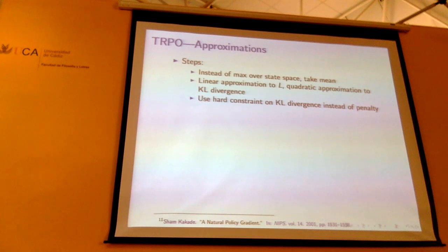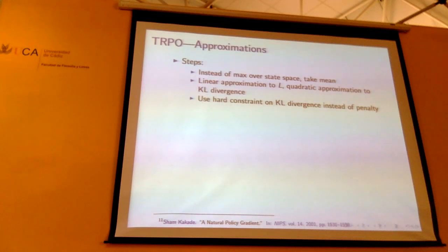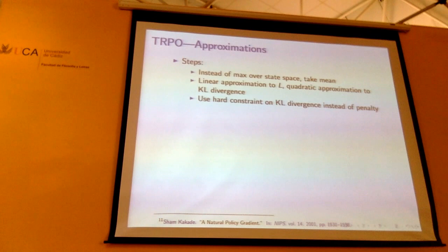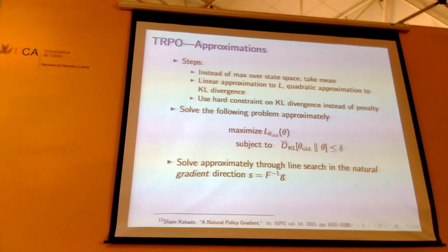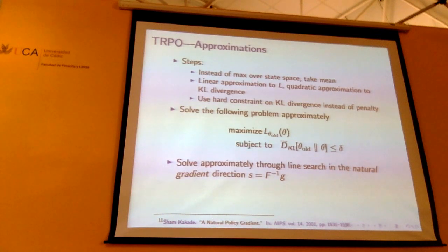We still do a line search on the original problem, and we use a hard constraint on the KL divergence instead of a penalty, because the penalty coefficient is hard to set — it's not interpretable when you're trading off reward against KL divergence. A fixed value for KL divergence is unitless and easy to interpret, measured in bits, and it turns out you can choose a particular value that works across a wide range of problems with very different dimensionalities. So we maximize our objective subject to a KL divergence constraint, compute a search direction via the quadratic/linear approximation, and do a line search.